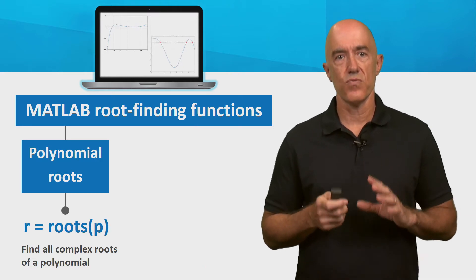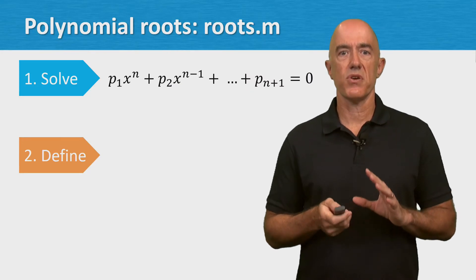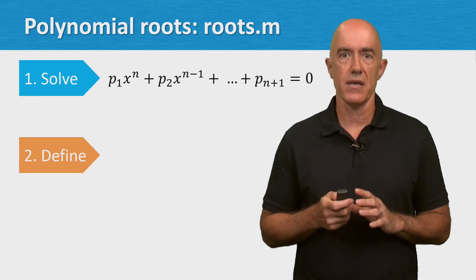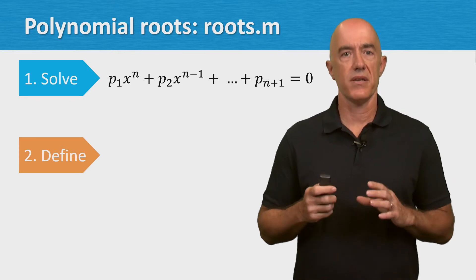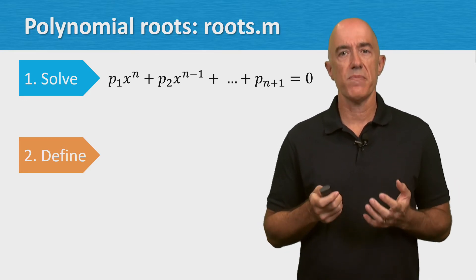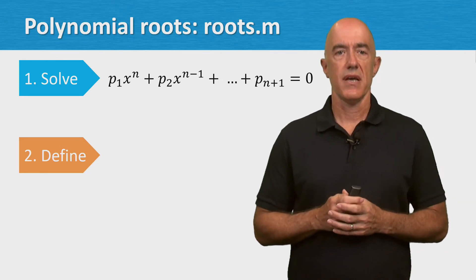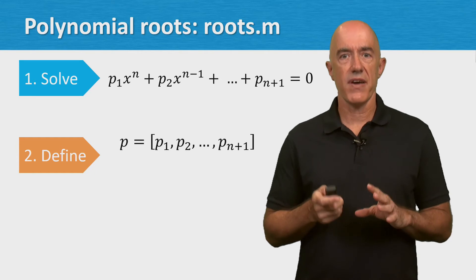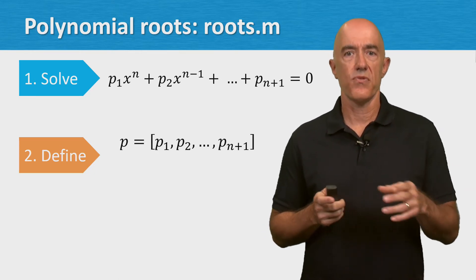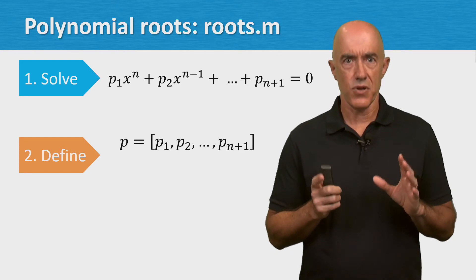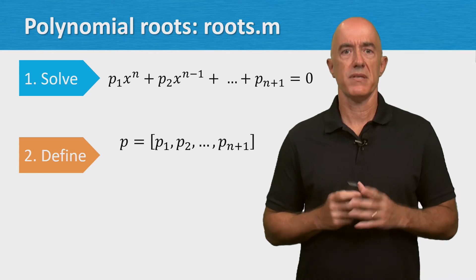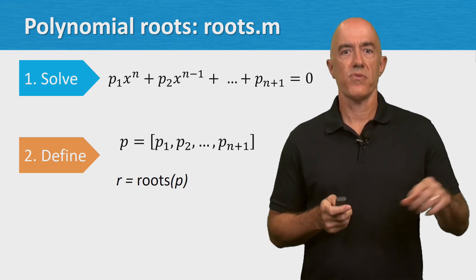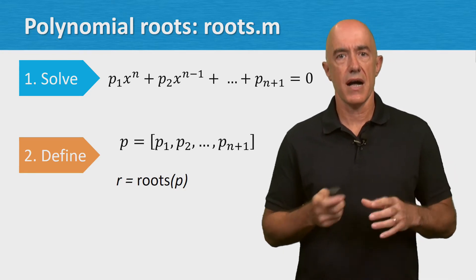Let's start with the function roots. We want to solve a polynomial equation that looks like p₁xⁿ + p₂xⁿ⁻¹ + ... + pₙ₊₁ = 0. So an nth degree polynomial has n+1 coefficients, and we need to order the coefficients from the highest degree to the lowest. We define a vector p with elements p1, p2, through p sub n+1. Don't forget to include zeros if any of the powers are missing. The correct call is r = roots(p), where r will be the n complex roots stored in a column vector.